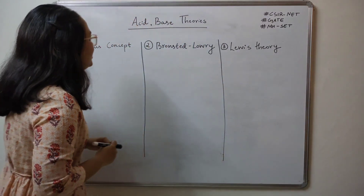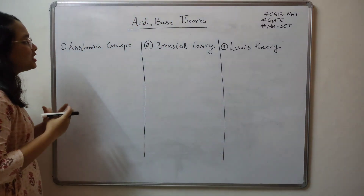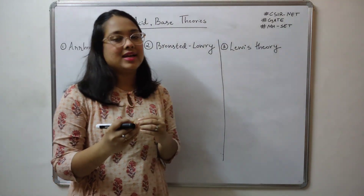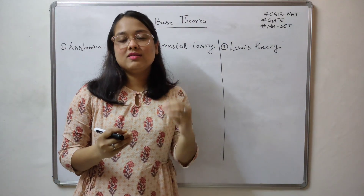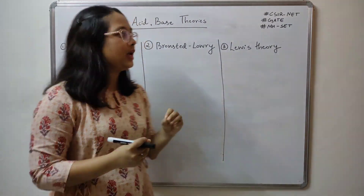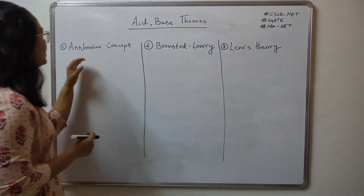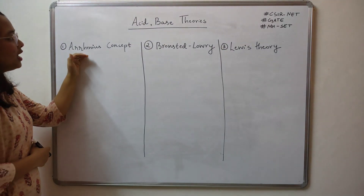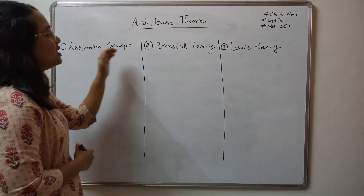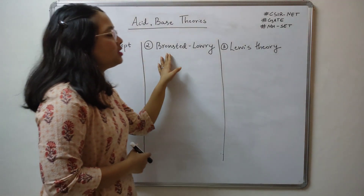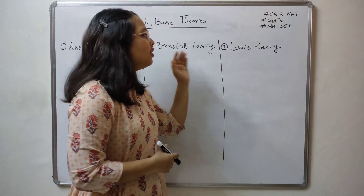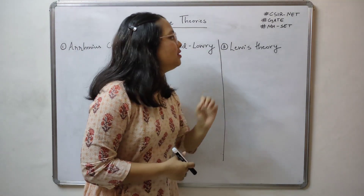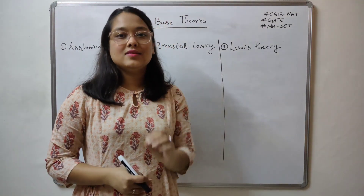There are three theories which explain how we define acids and how we define bases. The first one is known as the Arrhenius concept or Arrhenius theory. The second one is Bronsted-Lowry's theory, and the third one is Lewis theory.